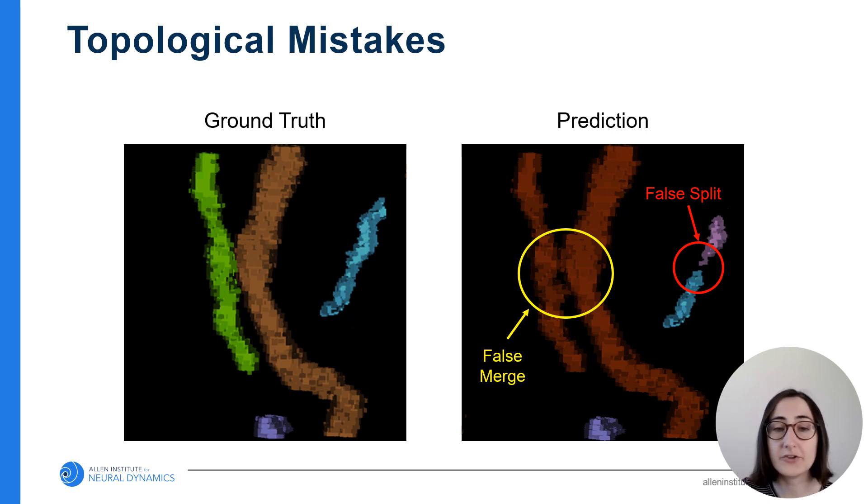The first is a false merge, which occurs when two distinct neurons are incorrectly merged together or identified as one neuron instead of two.